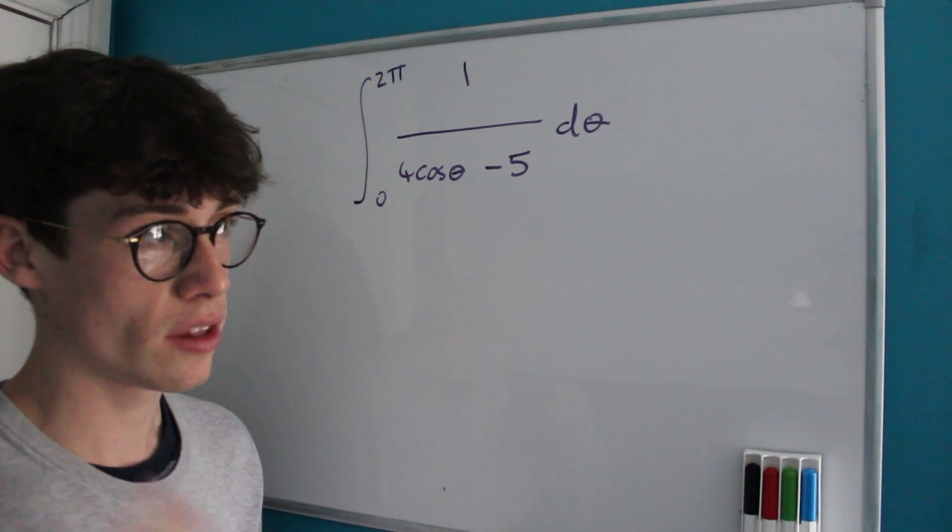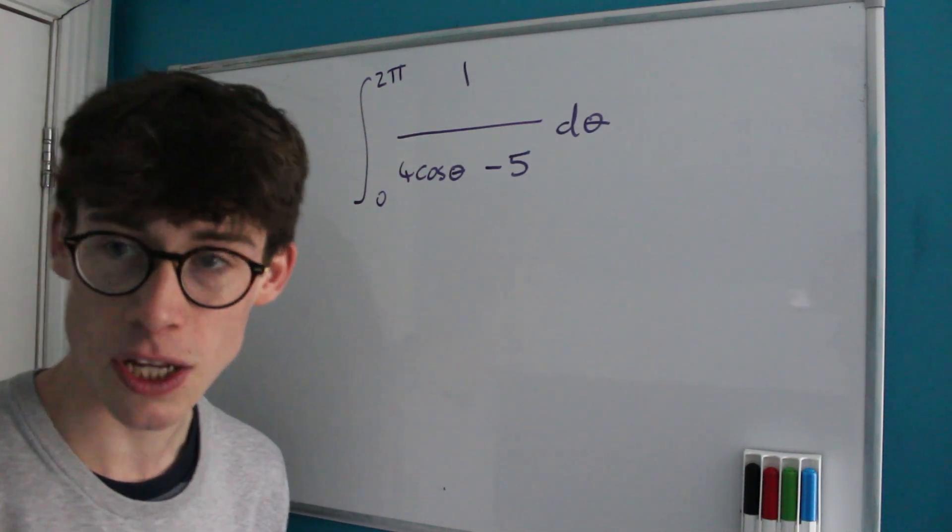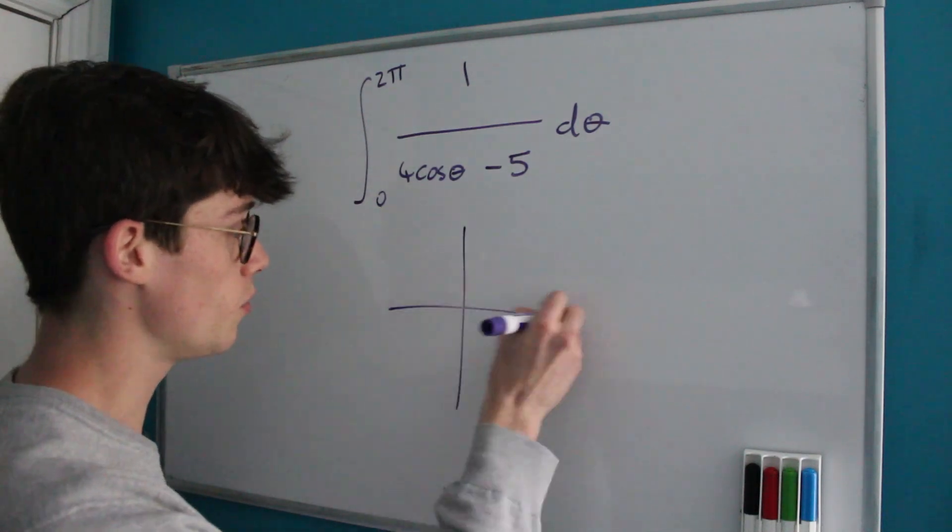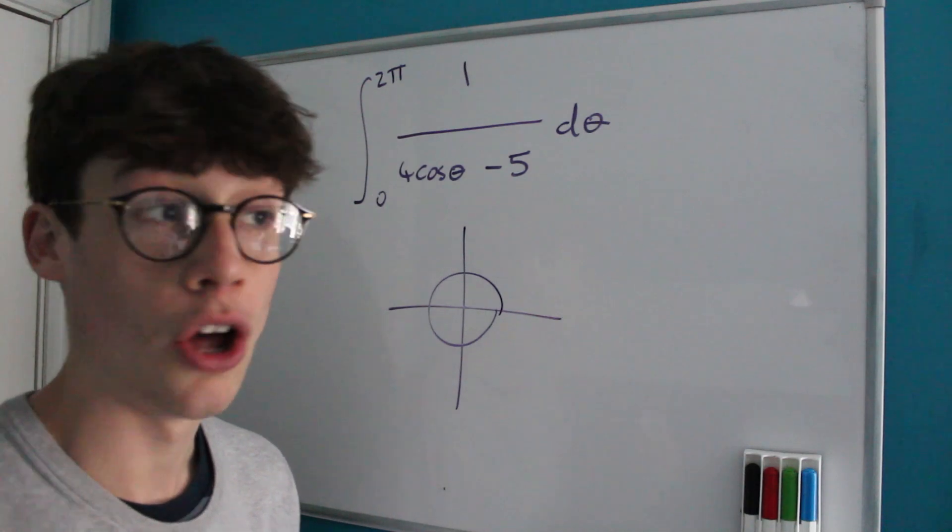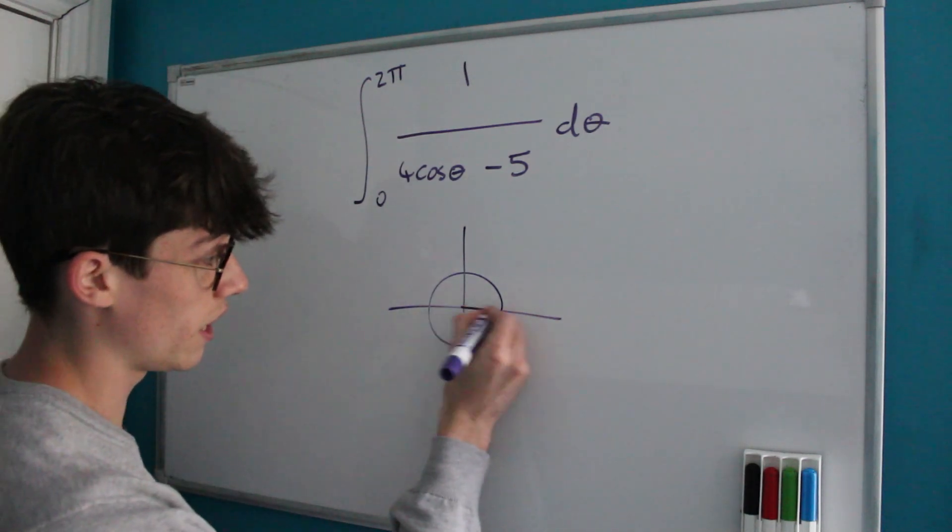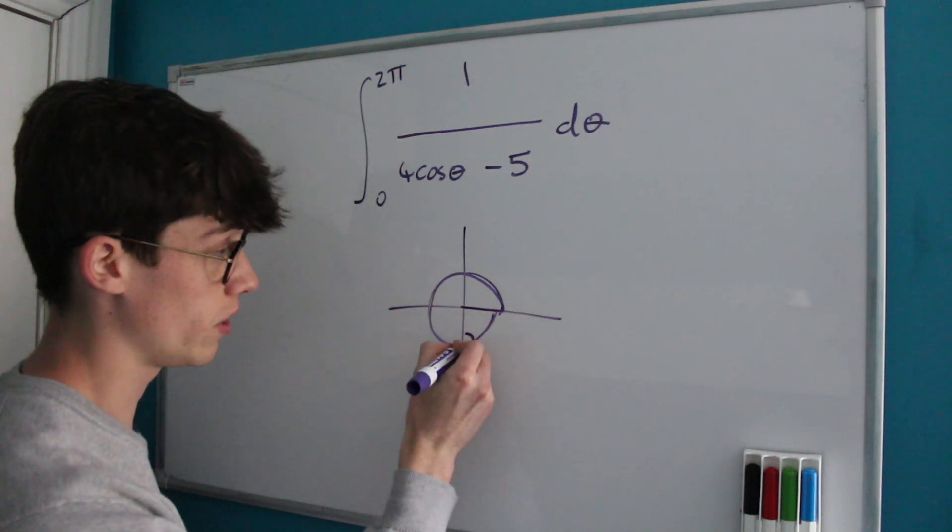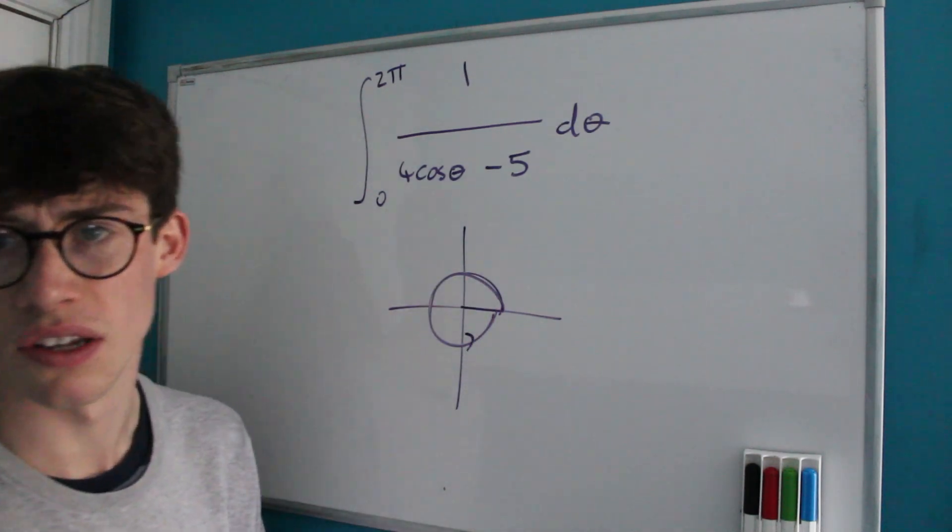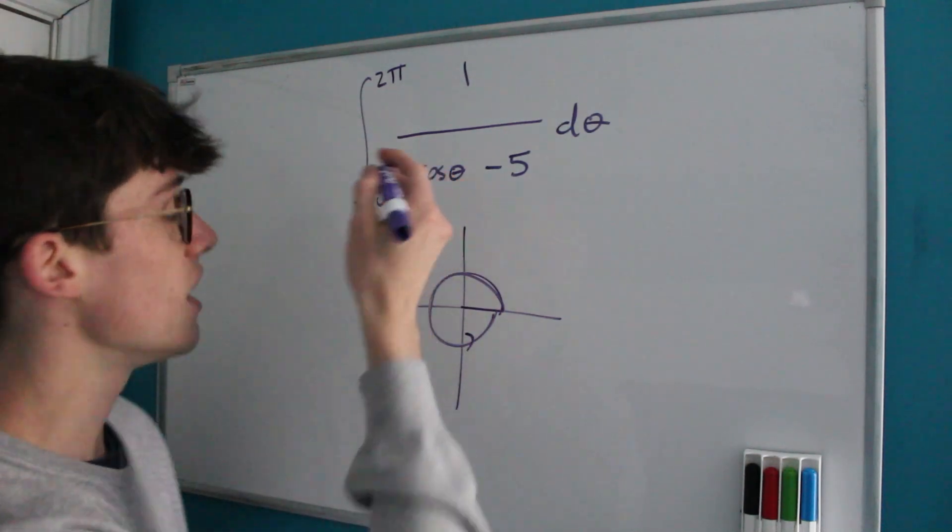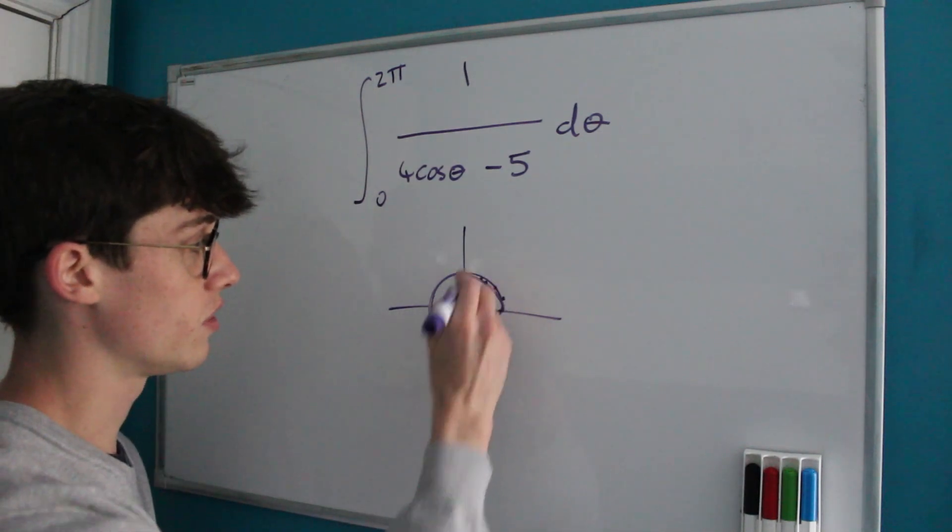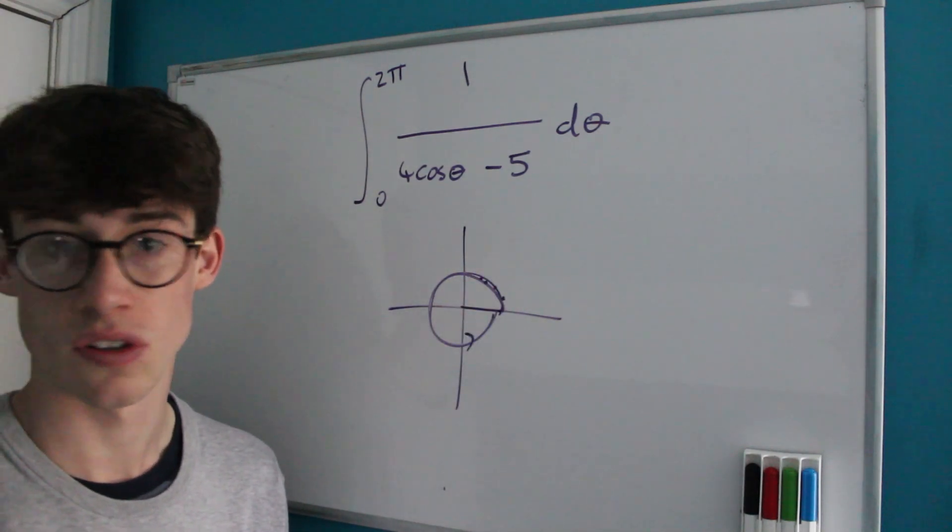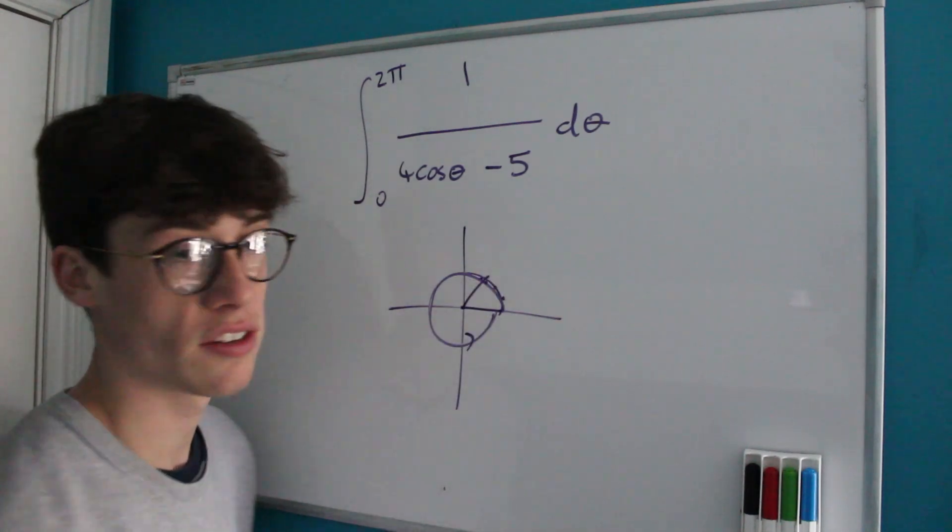And so with a mind of complex analysis we can look at this and think, well okay, 0 to 2π constitutes the angles that we go around the unit circle, right? We start at 0, we rotate by 2π radians and we end up back where we started. And of course cosine is inherently linked to the unit circle because at any given point on the unit circle its x-coordinate is cosine of the angle that it makes with the origin.